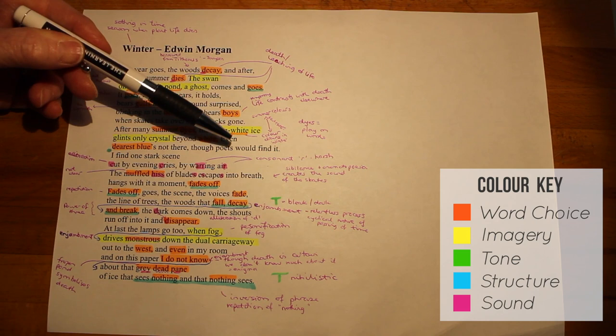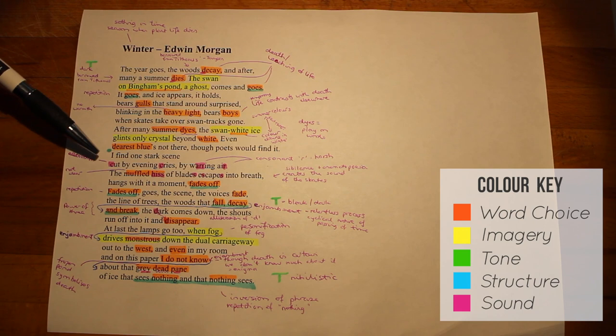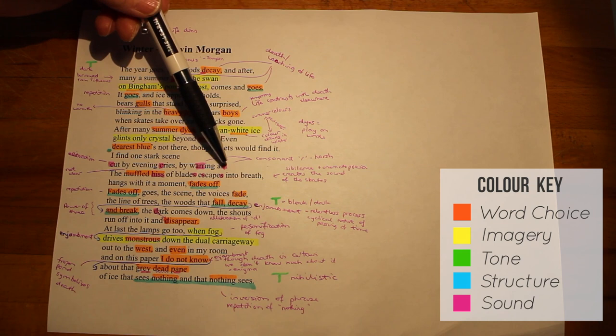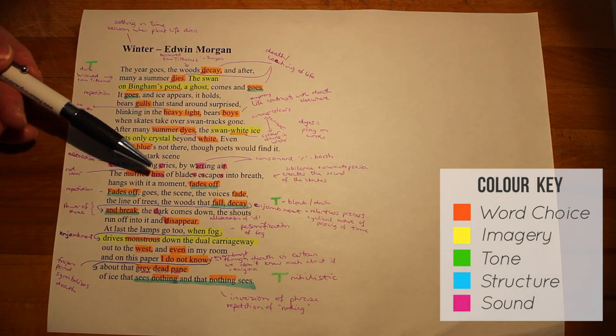Moving on to the second part of this one stanza, he describes one particular scene and it's very starkly described. The use of alliteration 'cut by evening cries' and then the consonants of 'warring air' creates an uncomfortable feel to this place. There is sound, the muffled hiss of blades escapes into breath.